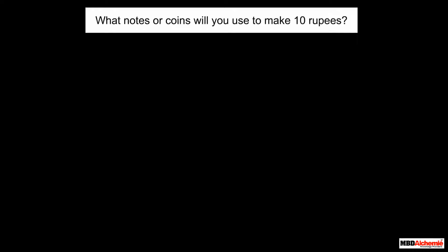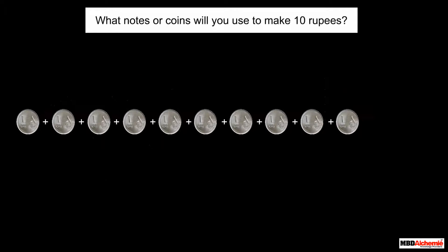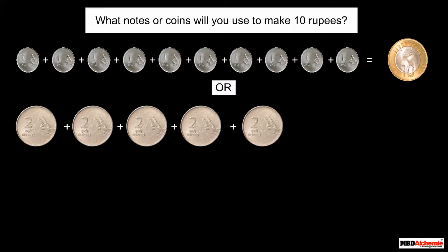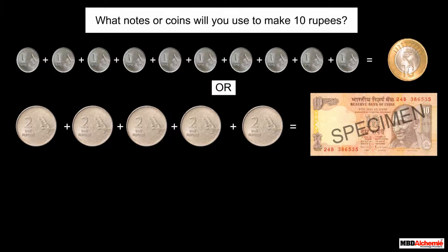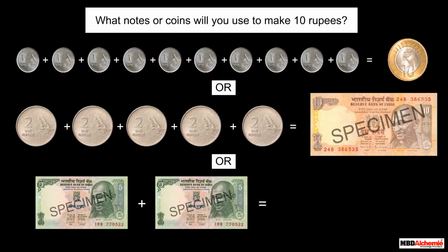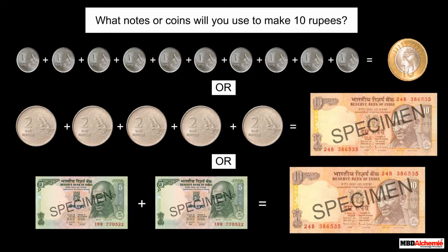What notes or coins will you use to make 10 rupees? 10 one-rupee coins or notes make 10 rupees. Or, 5 two-rupee coins or notes make 10 rupees. Or, 2 five-rupee coins or notes make 10 rupees.